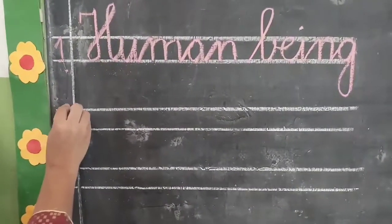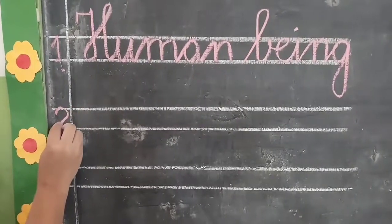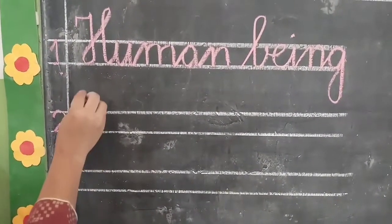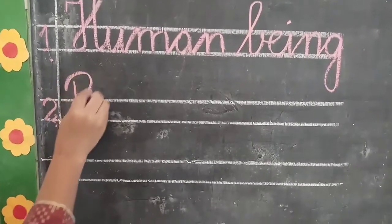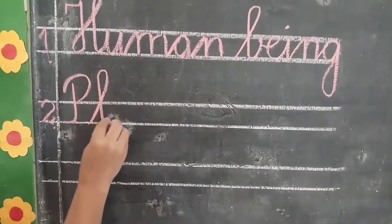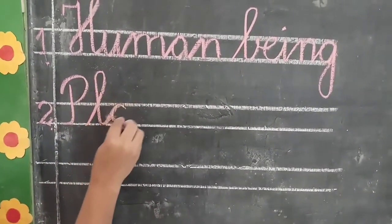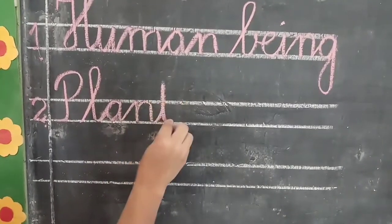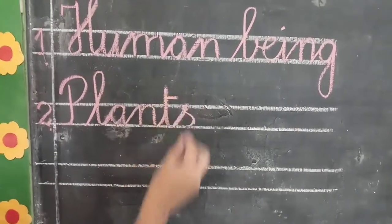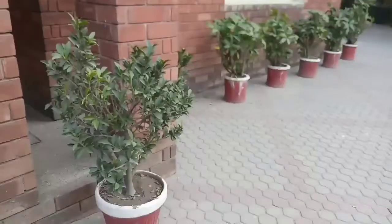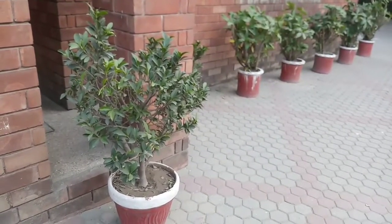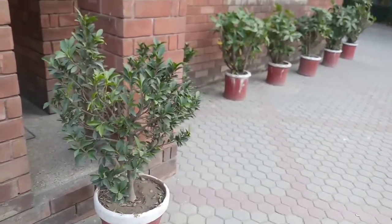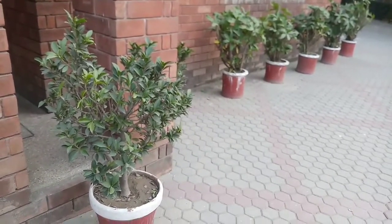And number 2 is — leave one line and write number 2. Number 2 is plants. P-L-A-N-T-S, plants. Plants jo hain, ye bhi living things mein aatei hain. Kuch chote plants hote hain, kuch bade plants hote hain.